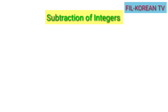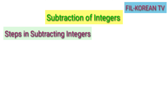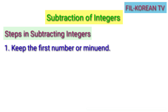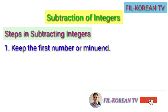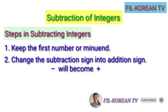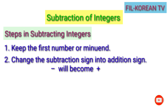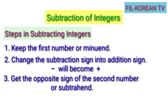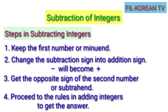Let's proceed to subtraction of integers. Let's know first the steps in subtracting integers. First, keep the first number or minuend. Second, change the subtraction sign into addition sign — that means minus will become plus. Third, get the opposite sign of the second number or subtrahend. And fourth, proceed to the rules in adding integers to get the answer.